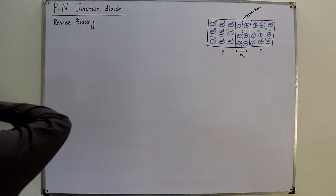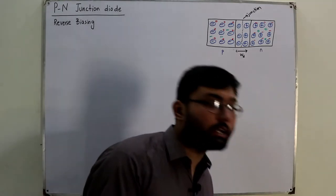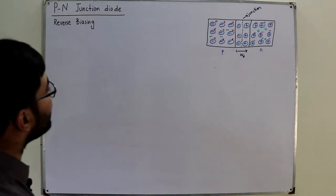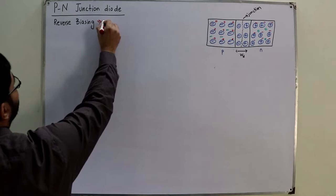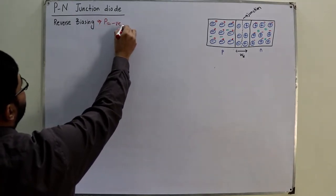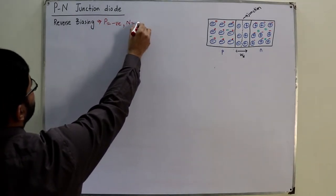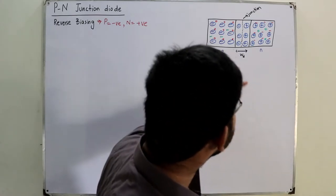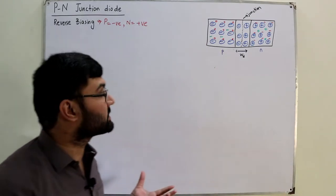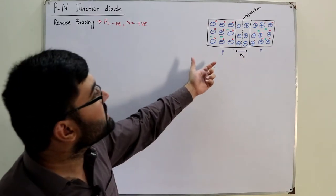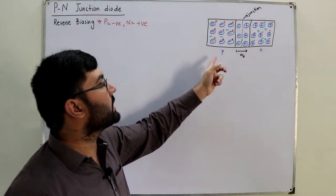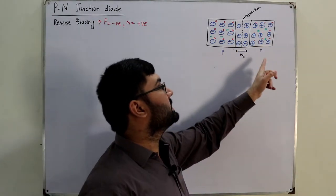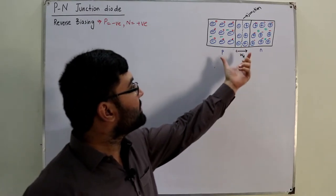Now, what does the term biasing mean? Biasing means the application of an external voltage. Reverse biasing would suggest that you have your P connected to the negative terminal of the battery and your N connected to the positive terminal. This is your PN junction diode under no bias condition: you have a P side with holes as majority carriers and electrons as minority carriers, whereas on the N side you have electrons as majority carriers and holes as minority carriers.